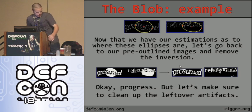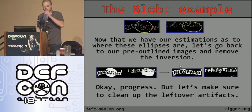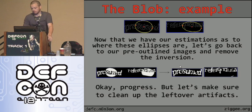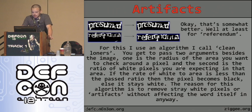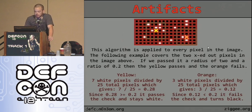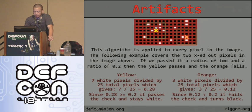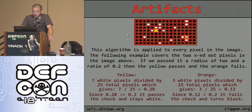To clean up the artifacts, I use an algorithm called 'clean loners.' You pass two arguments: the radius of the area to check around the pixel, and the ratio of white pixels expected in that area. If the ratio is less than expected, remove the pixel (set it black); otherwise, ignore it. For example, with radius set to 2 and minimum ratio 0.2: in the first case, 7 out of 25 pixels are white — that's 0.28, which passes. In the second case, only 3 out of 25 — that doesn't pass, so you remove it.